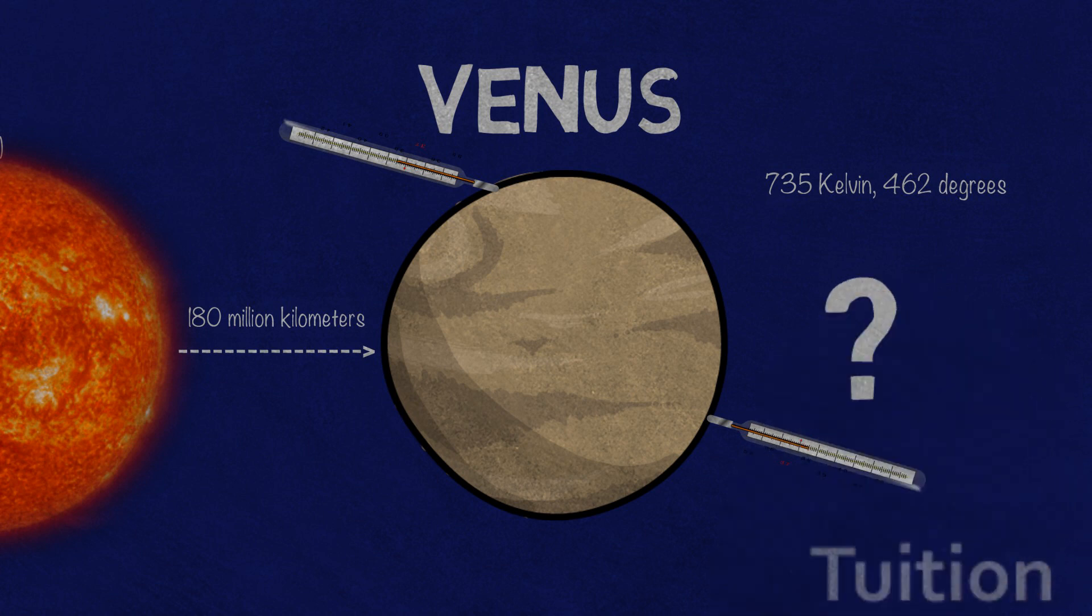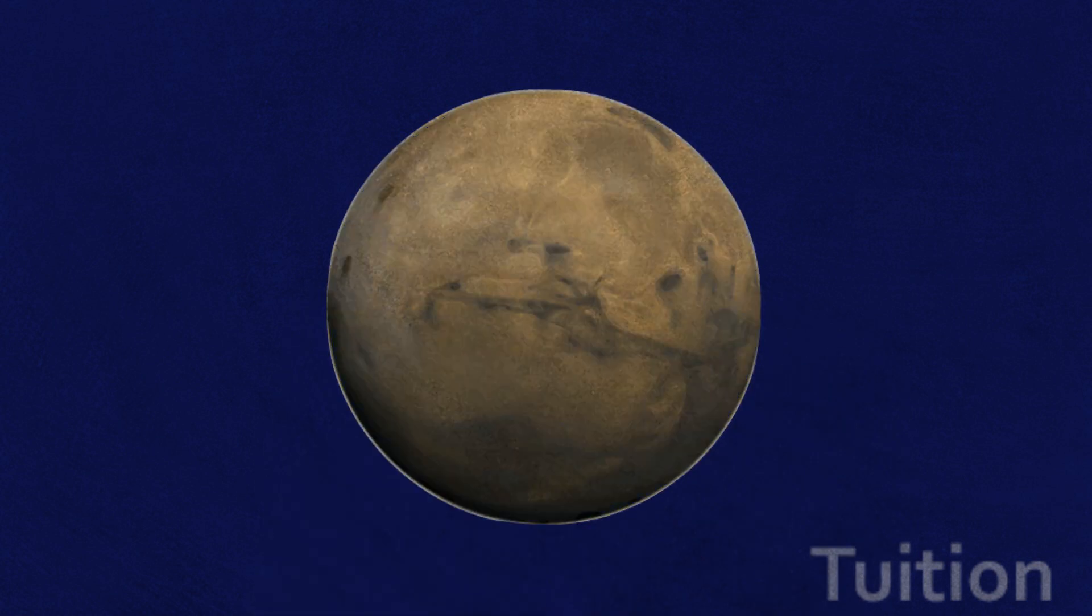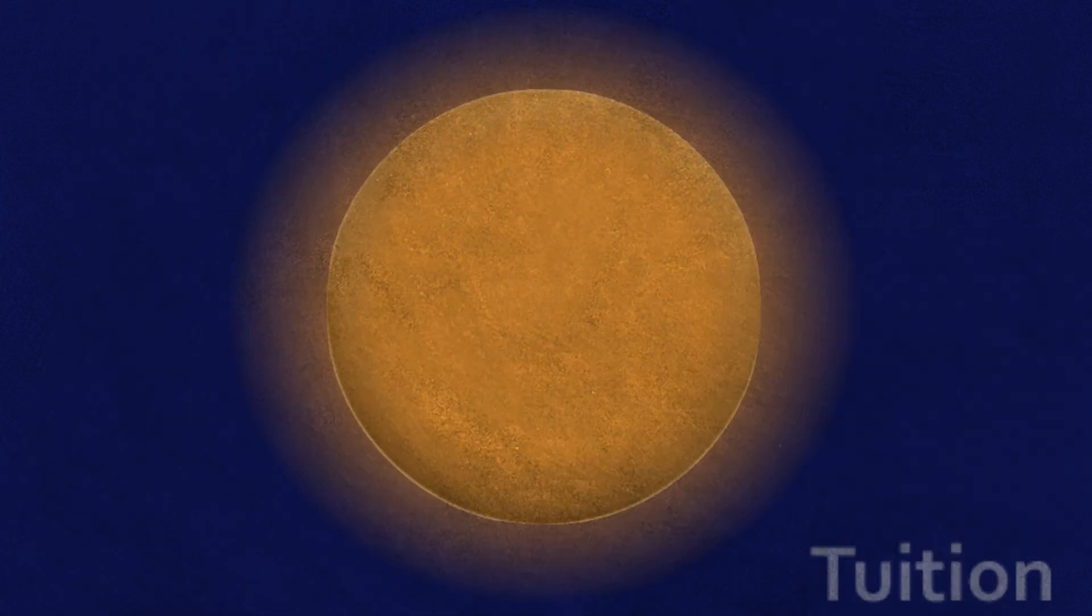So, why is Venus so much hotter than Mercury even though it's farther away from Sun? It's all about atmosphere. Mercury is an airless world, not unlike the Moon.